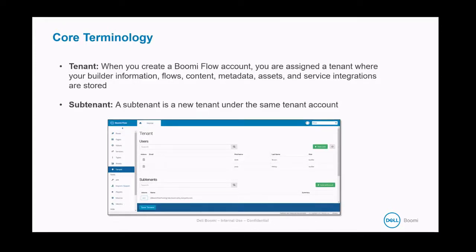A subtenant is a new tenant under the same tenant account. Subtenants do not have visibility into the content, flows, values, or service integrations of the tenant, and vice versa. You can use different subtenants for different divisions of your company — for example, separate subtenants for HR and accounting. Subtenants can also help organize your project; you can logically separate out deployment environments into development, staging, and production. It's important to note that when you package and deploy a flow into another tenant, all unique identifiers of all elements in the flow remain the same. Tenants can all talk to the same database through services, so you can have many different tenants acting on a central data repository.